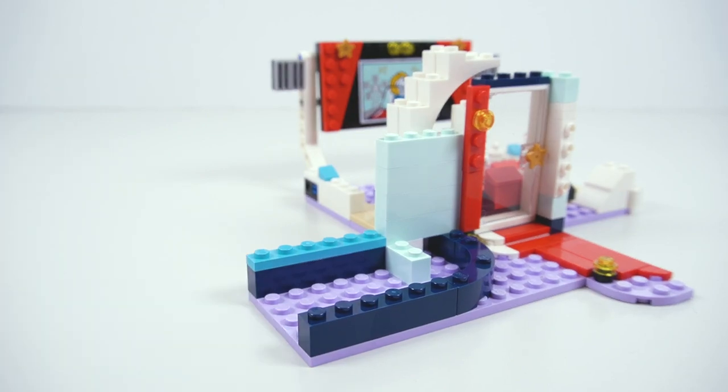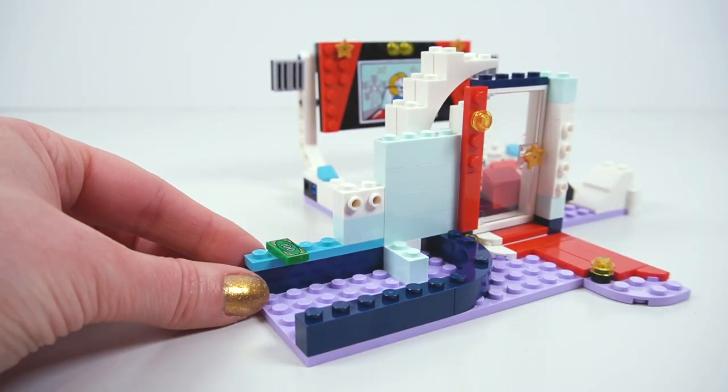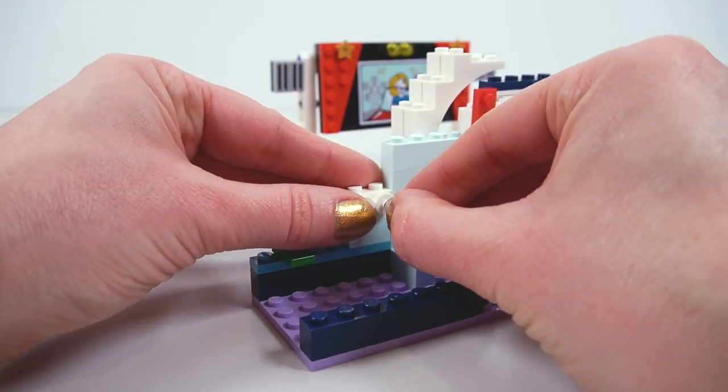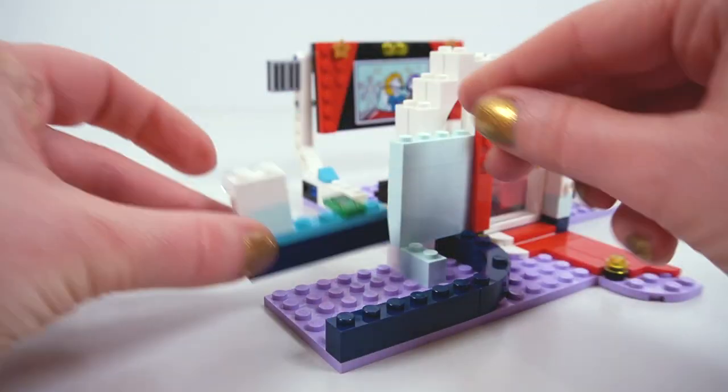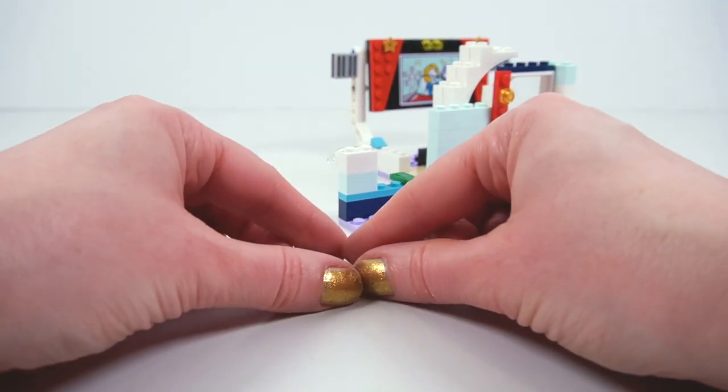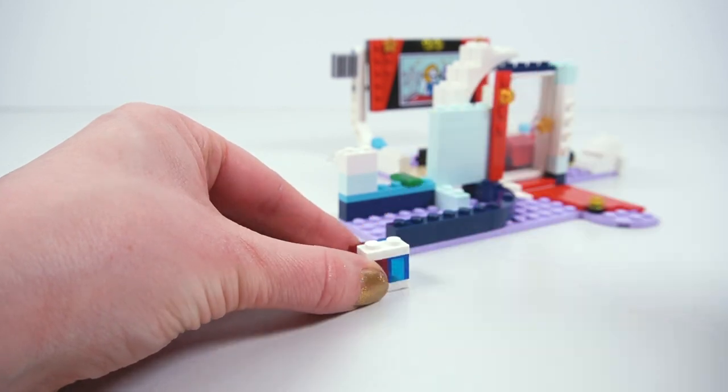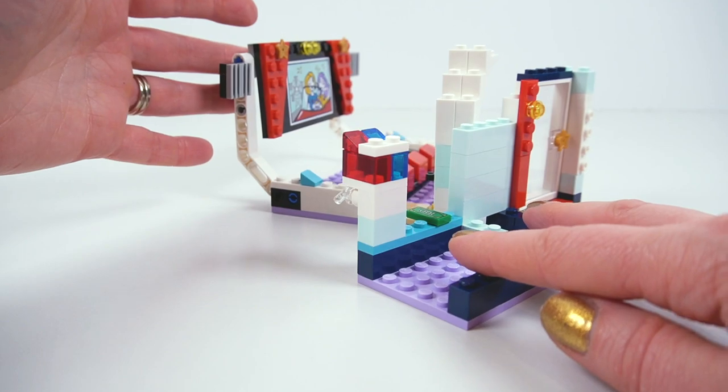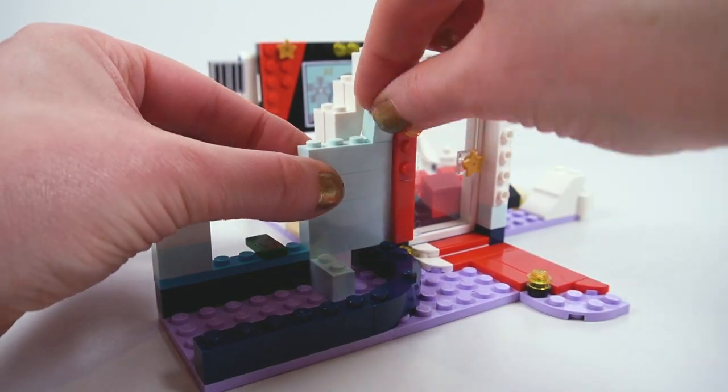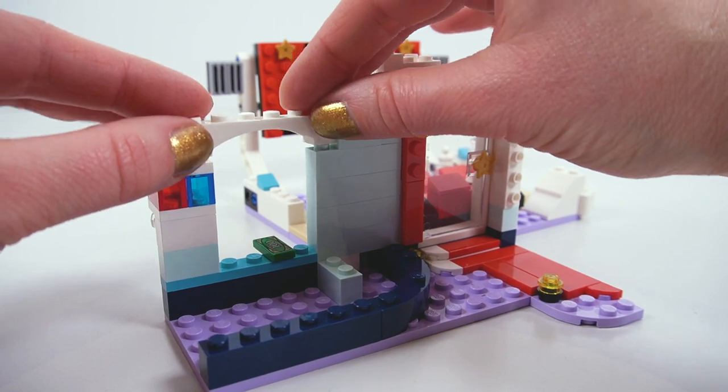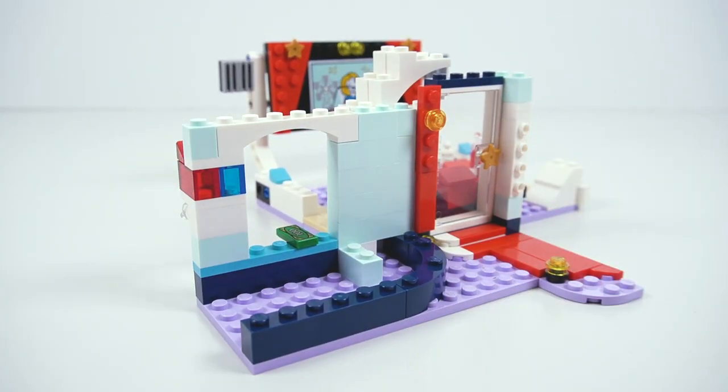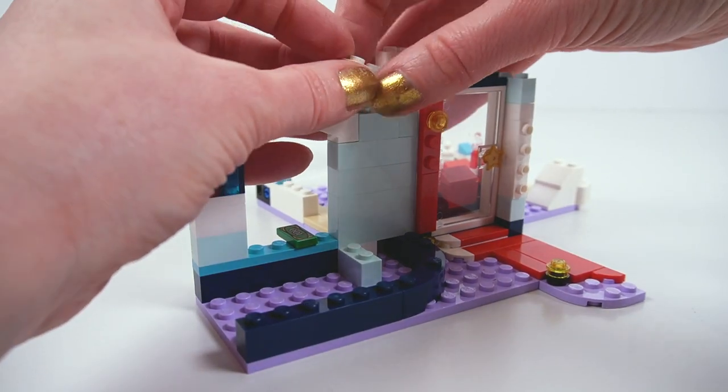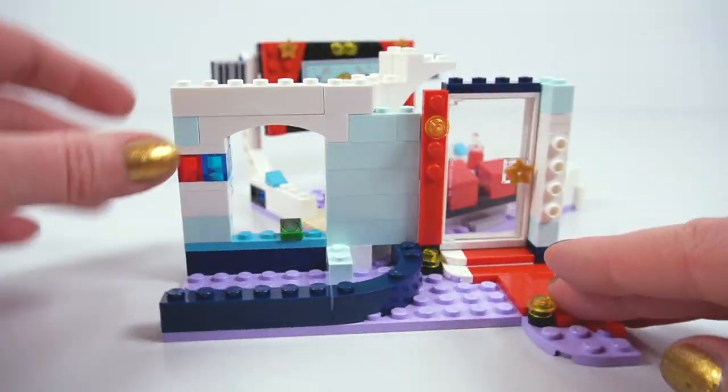We're starting to build our popcorn and slushy kiosk. Here we go with the slushy dispensers. On they go. I might have built it round the wrong way. Take that off and turn it around. We have the top of our slushy machine. Red and blue. We're building up the kiosk with a little archway, building up that roofline. And we have our top hinge, and that just attaches onto the seating area.